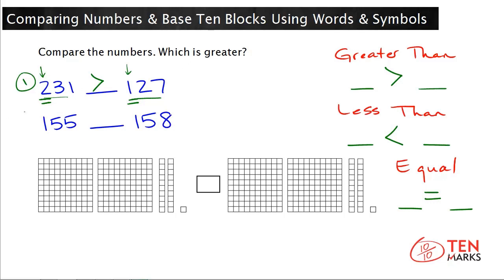Now let's look at the next example. You have 155 on the left and 158 on the right. Begin by comparing the hundreds. You have one hundred in 155 and one hundred in 158. This means you have to compare other digits, because both numbers have the same number of hundreds. The next step is to compare the digits in the tens place.